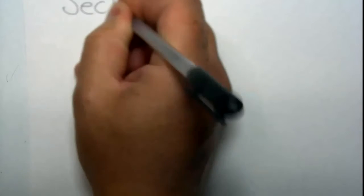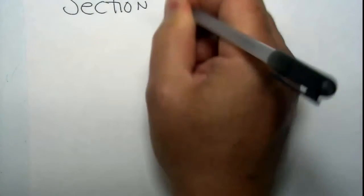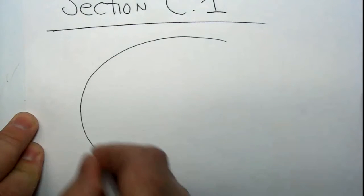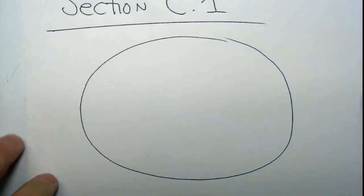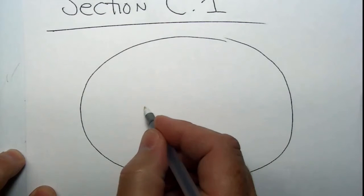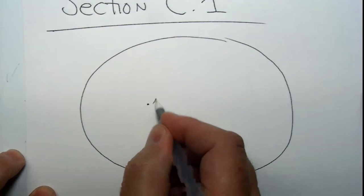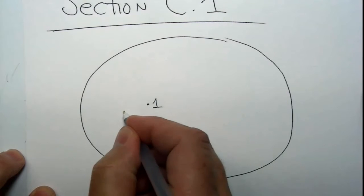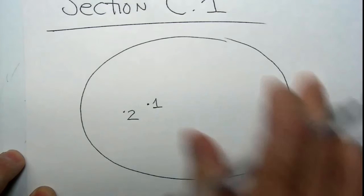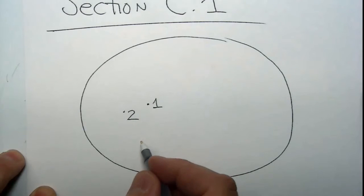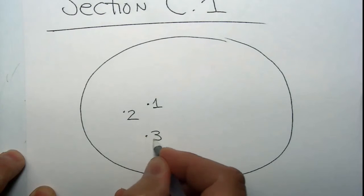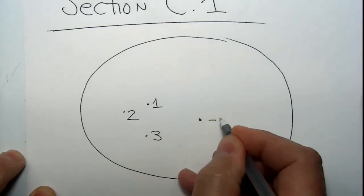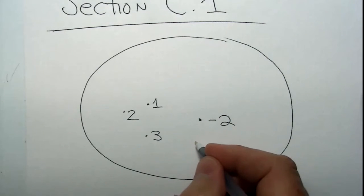This is Section C1. If you look at a big set of numbers, there's a whole bunch of numbers out there — any number you can possibly think of lives in here. We're going to say that every number that is possibly created will reside in this set.